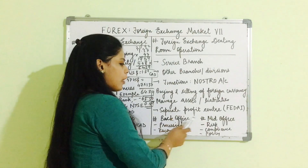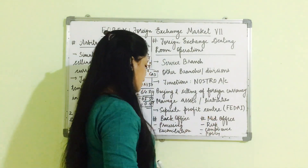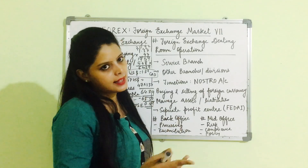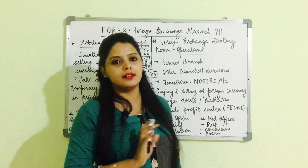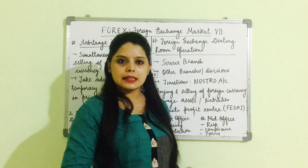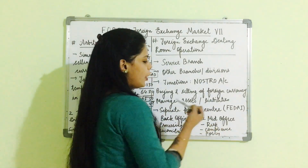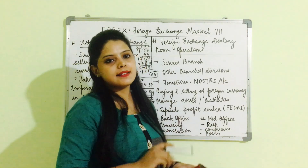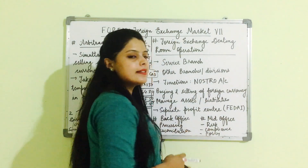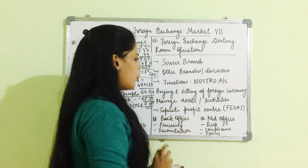The institution has two offices: back office and mid office. The back office processes transactions and performs reconciliation if any errors occur. The mid office handles risk management — including market risk and operational risk — as well as compliance and policy framing. These are the working functions of these two offices within the institution.